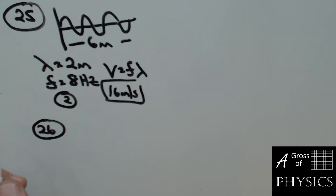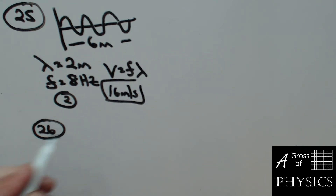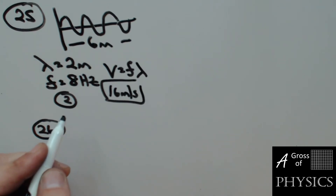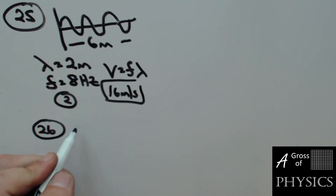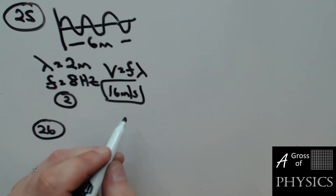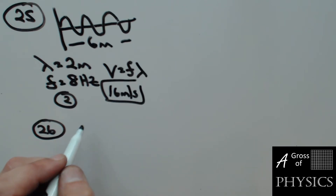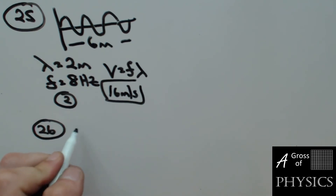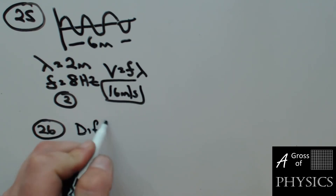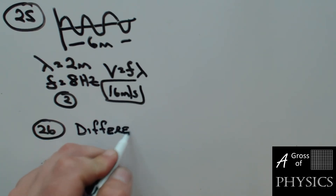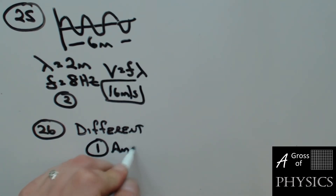Number 26: we have two waves. They're doing the same thing, but one looks higher than the other. Since they go forward the same amount, they have the same wavelength. They're in the same medium, so they have the same speed. They're also oscillating at the same frequency. The only difference is going to be the amplitude, because they have different heights.